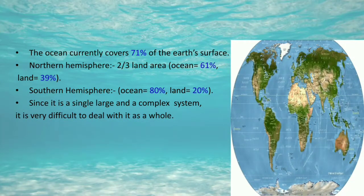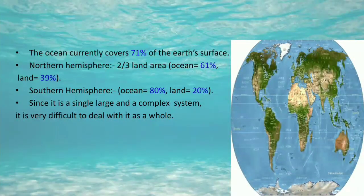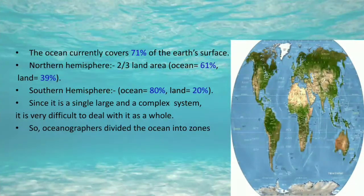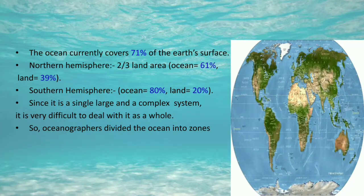Since the ocean is a single, large, and complex system, it is very difficult to deal with it as a whole. This is why oceanographers have divided the oceans into different zones according to depth, light, and temperature.